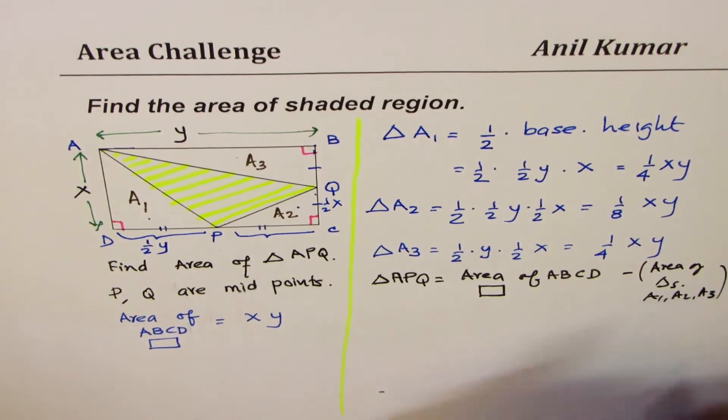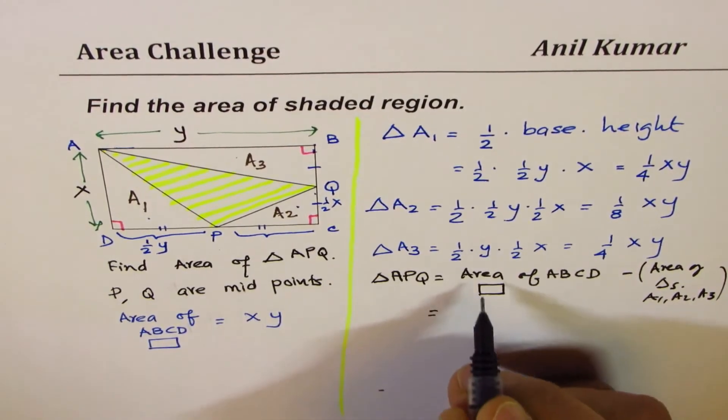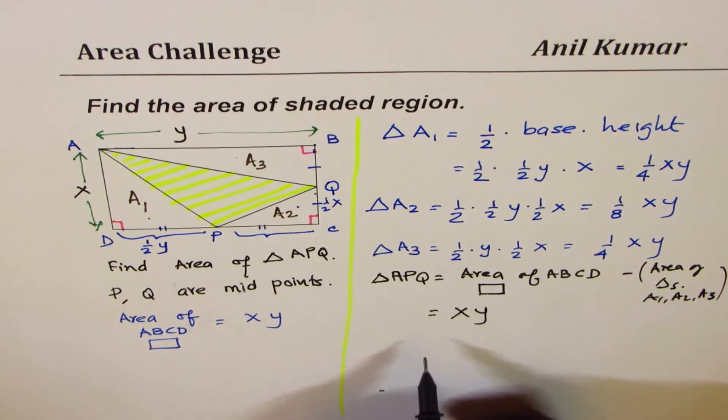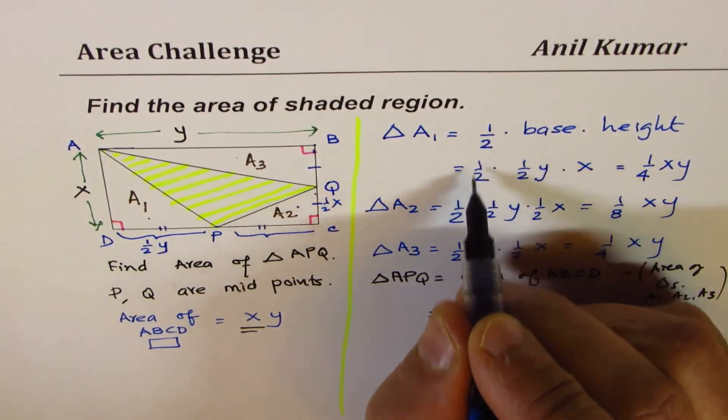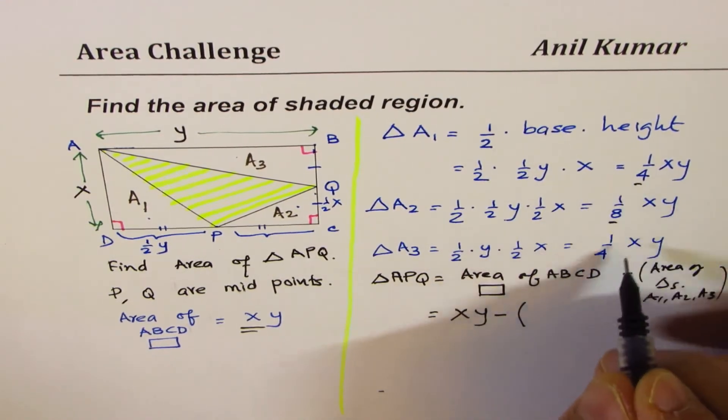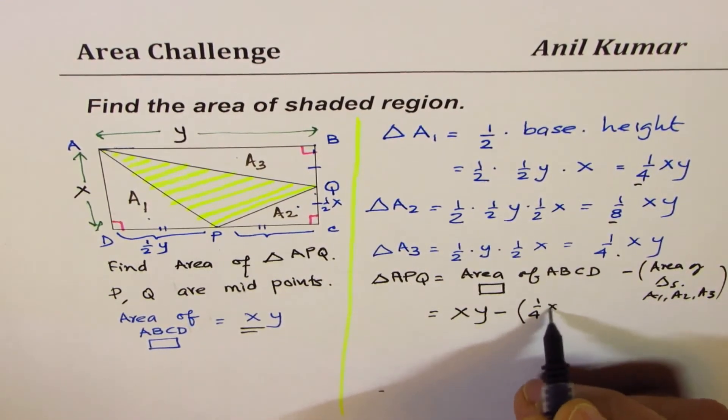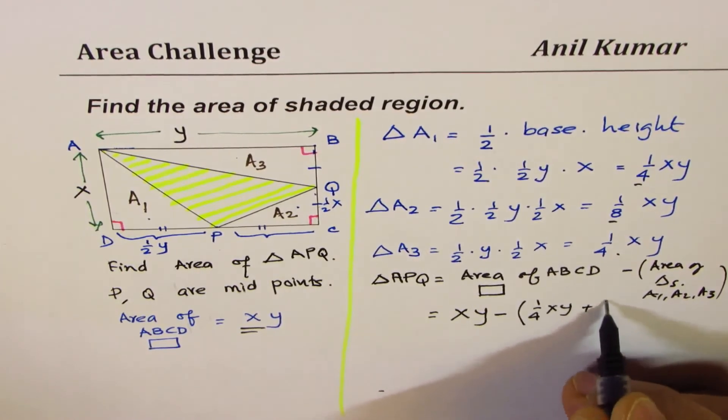Let's rewrite. Area of rectangle as we know is XY. This is minus—we'll add all these—minus 1/4 of XY plus 1/8 of XY plus 1/4 of XY.